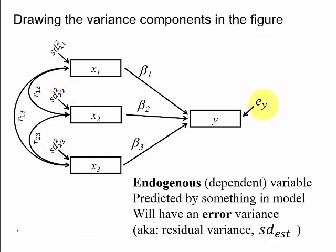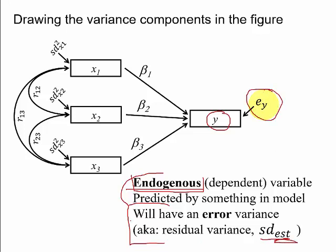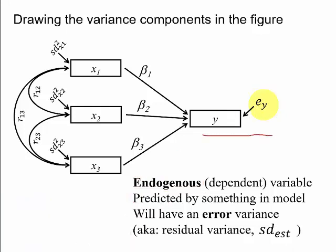In contrast, an endogenous variable is one that gets predicted by something — what we could call a dependent variable. In this model, y is the endogenous variable. Whereas exogenous variables have a regular total variance, for endogenous variables we focus on their error variance or residual variance — the standard error of estimate. That's the parameter we focus on estimating in structural equation modeling.